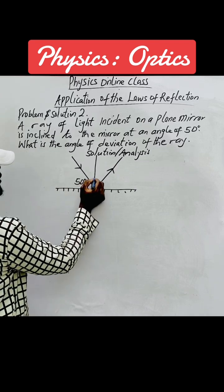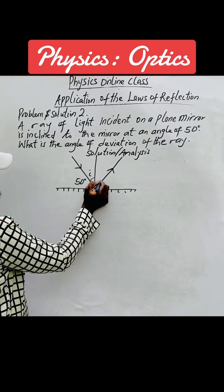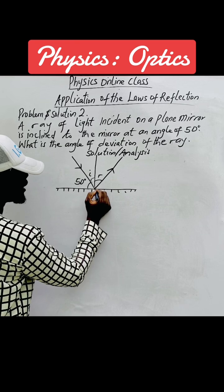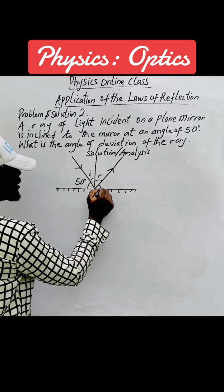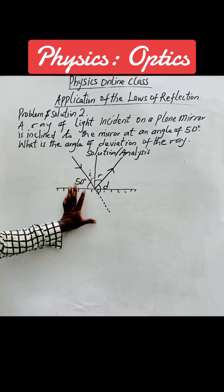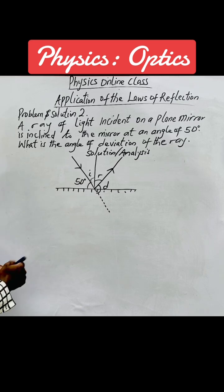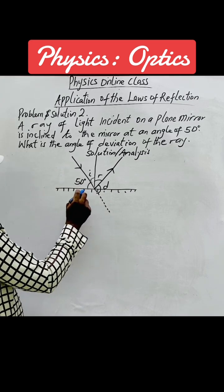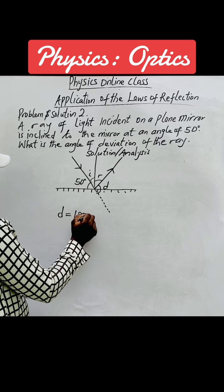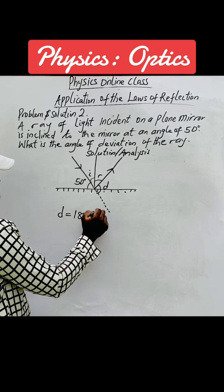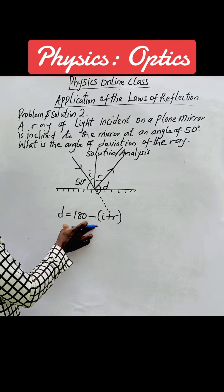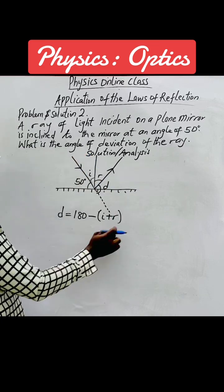This place is the incident angle and this will be the reflected angle. Now if you continue this down this way, this place is what we call the deviation — the deviation D. From this, we have that the deviation is related as 180 minus (i plus r), applying the sum of angles in a straight line.